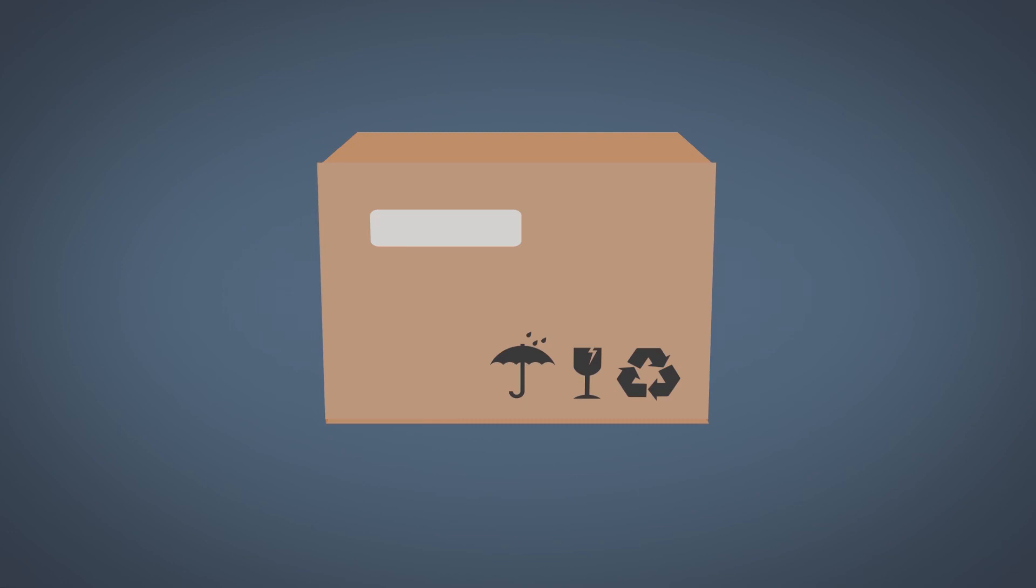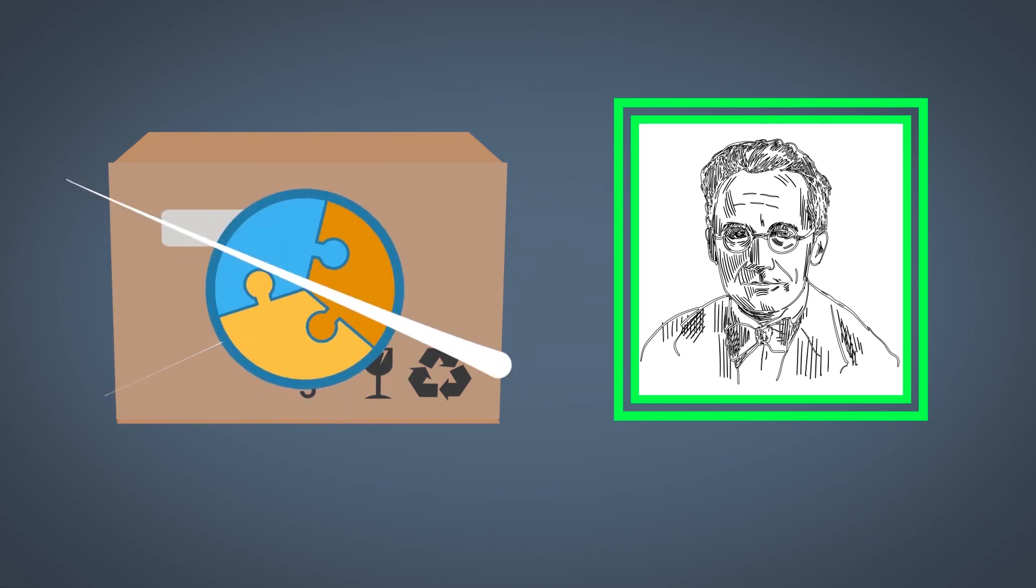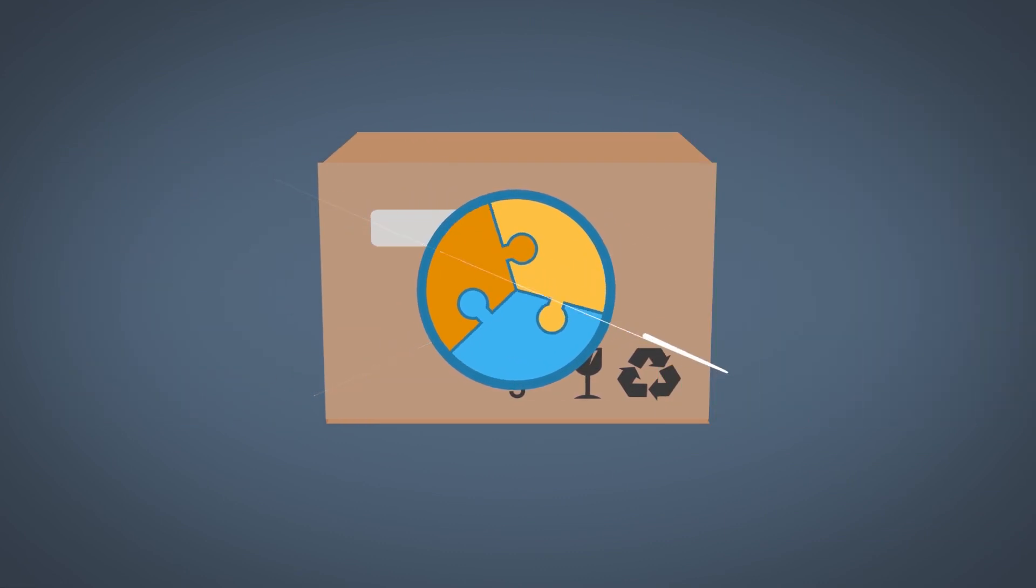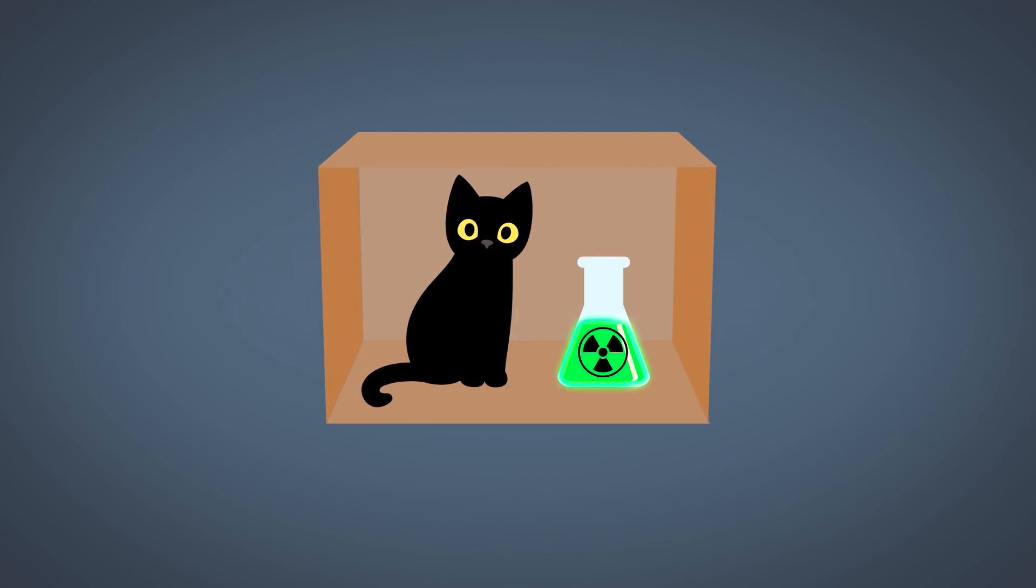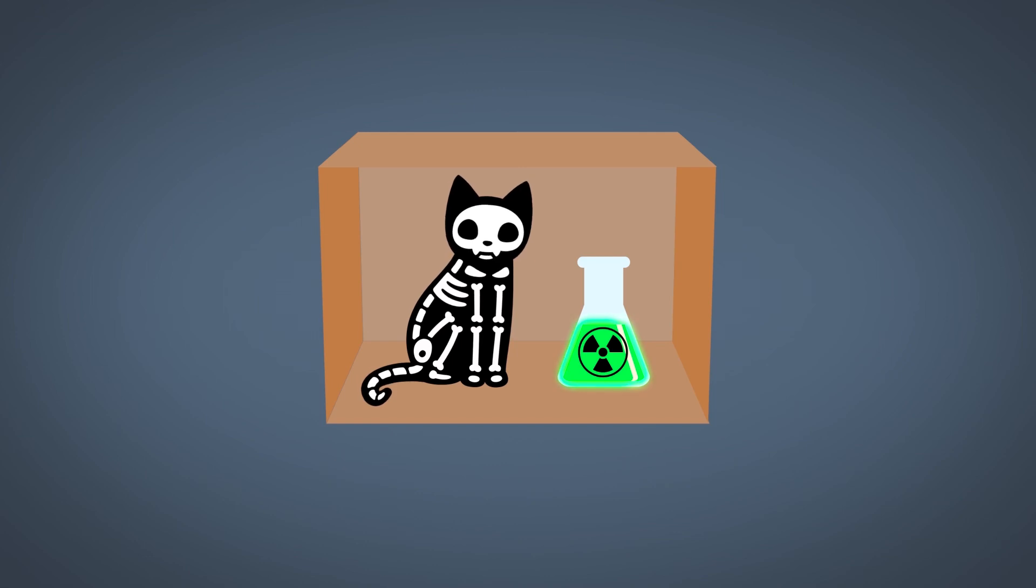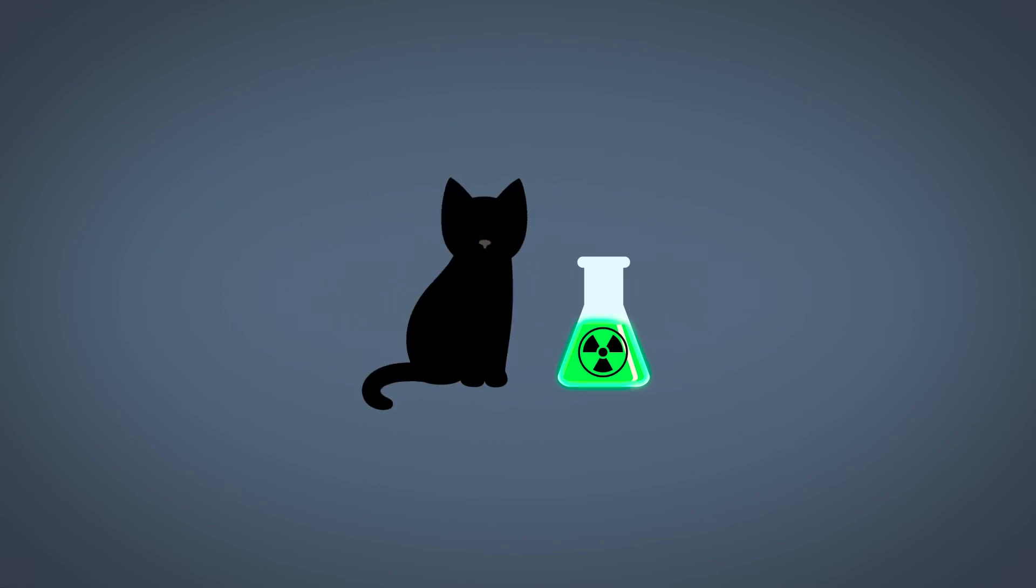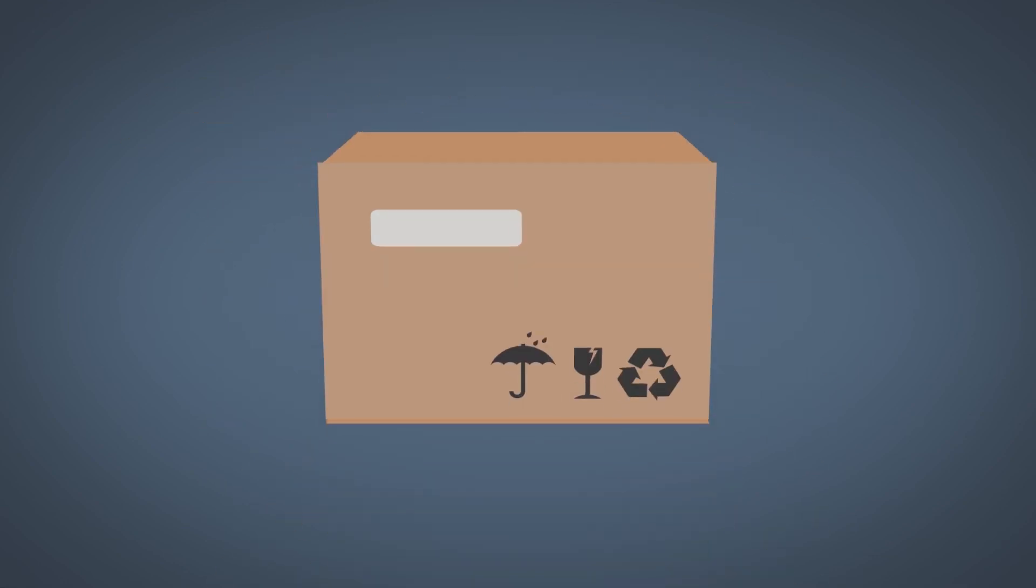But Schrödinger pointed out that in quantum mechanics, the way we're supposed to think about it, is that the cat is both dead and alive. It exists in the quantum superposition of deadness and aliveness. And when we open up the box, that is the moment of the choice. That is the moment of the cat becoming dead or becoming alive. But until we open up the box, it is both dead and alive.